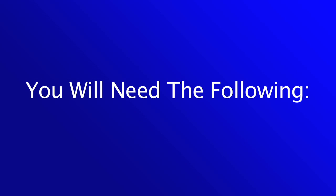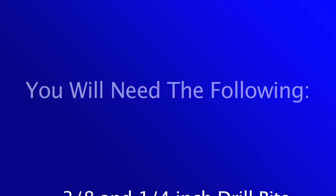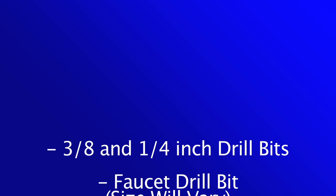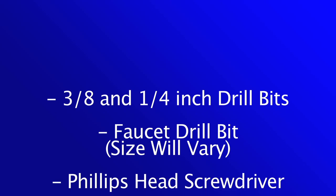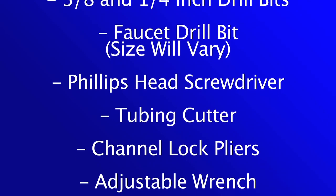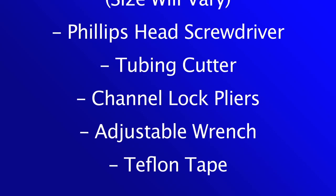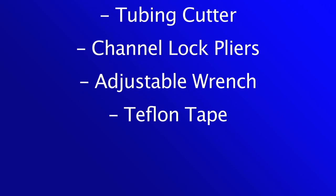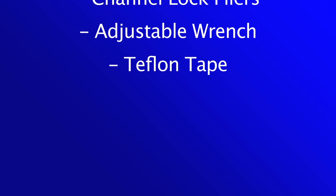To install your RO system, you'll need a few tools to make the installation easy. You'll need the following: three-eighths and quarter-inch drill bits, faucet drill bit (size type will vary on the faucet used), Phillips head screwdriver, tubing cutter or razor knife, channel lock pliers, adjustable wrench, and Teflon tape.